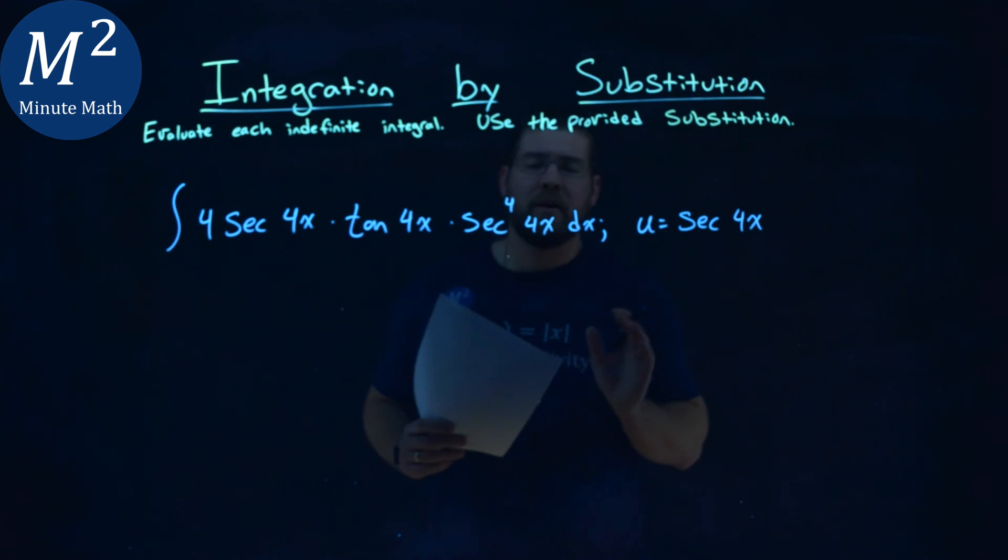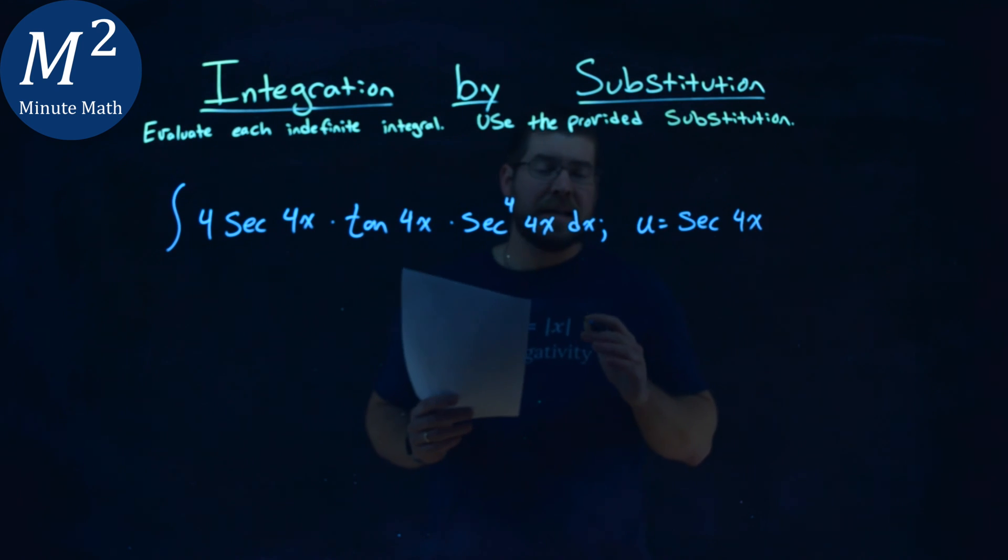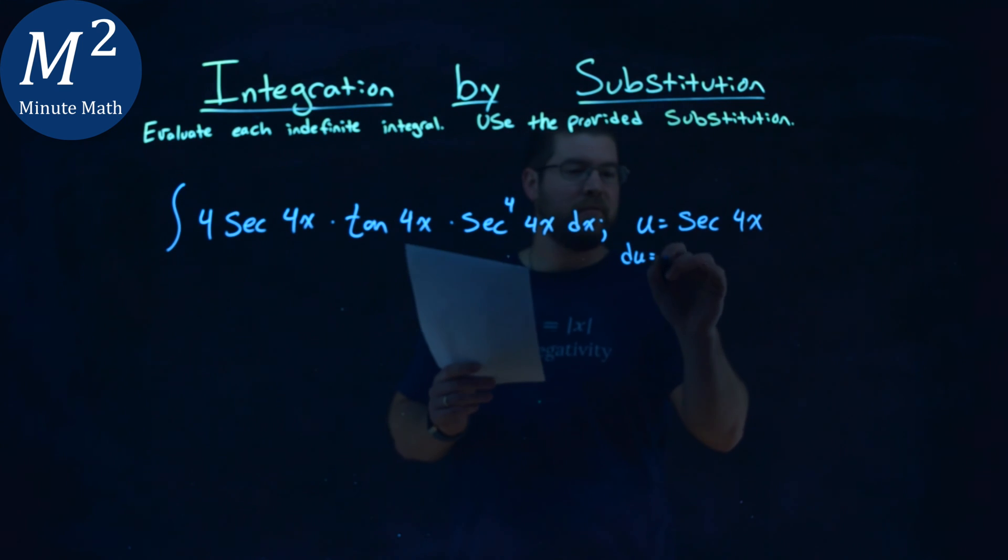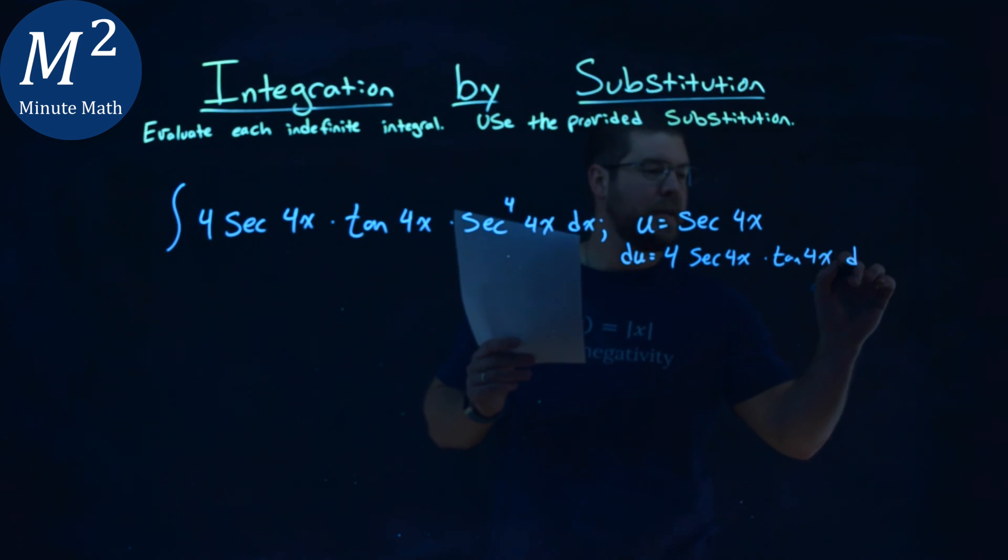They tell us the u value right off the bat, which makes it easier. Now I want to find my du, the derivative. The derivative of secant 4x is 4 secant 4x times tangent 4x, dx.